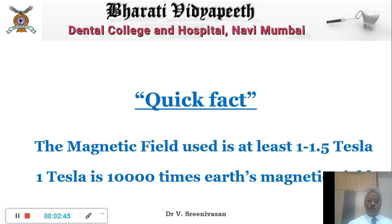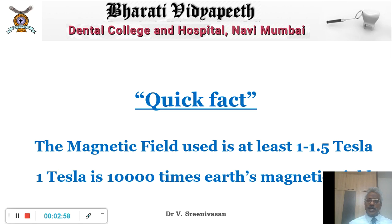The magnetic field used in MRI — some newer machines are even 3, 4, or 5 tesla — but the minimum we need is about 1 to 1.5 tesla. And 1 tesla is 10,000 times the strength of the Earth's magnetic field.